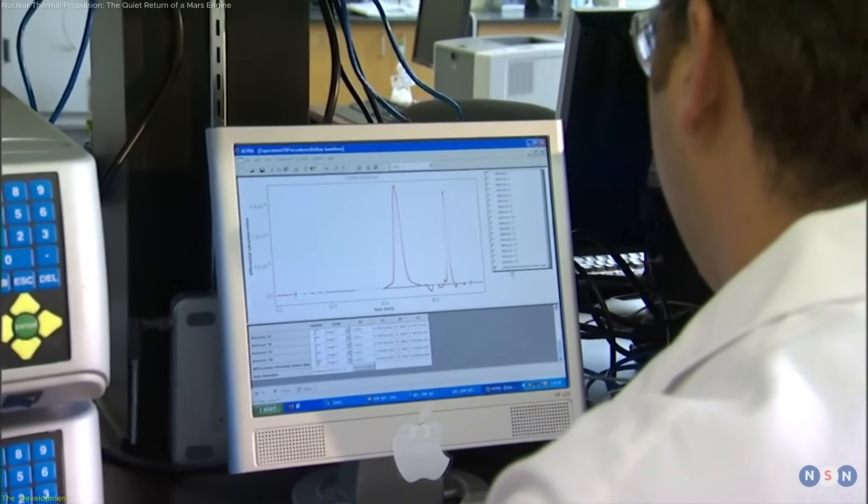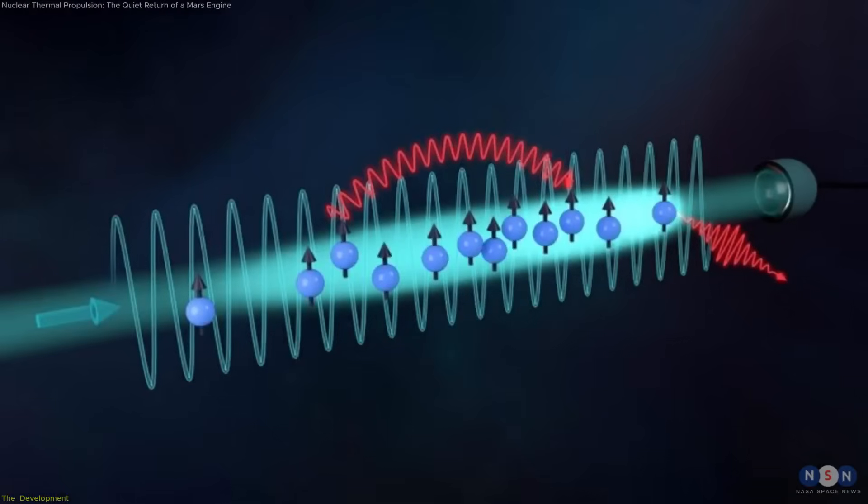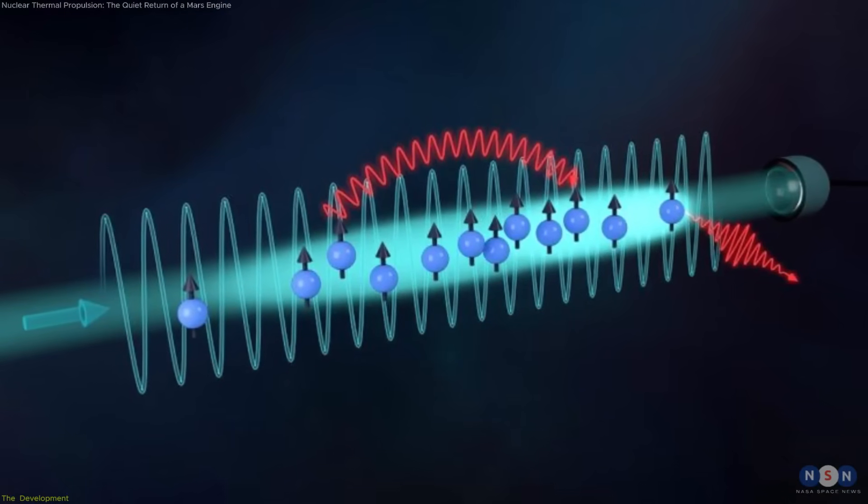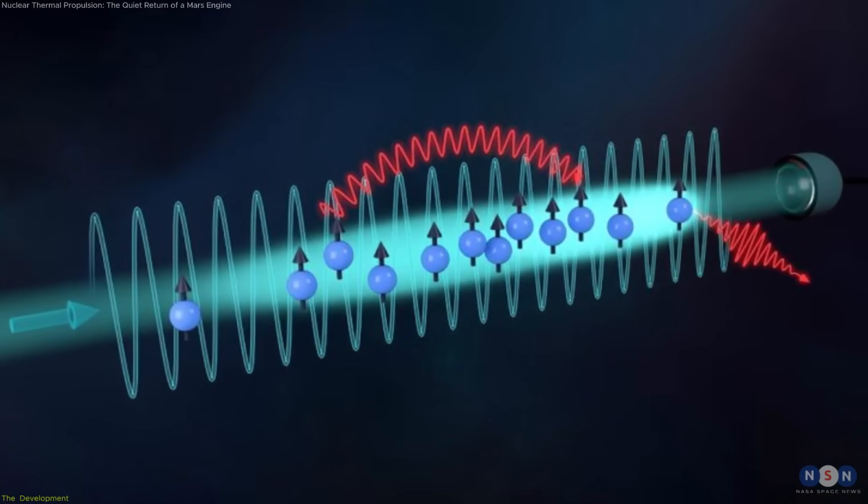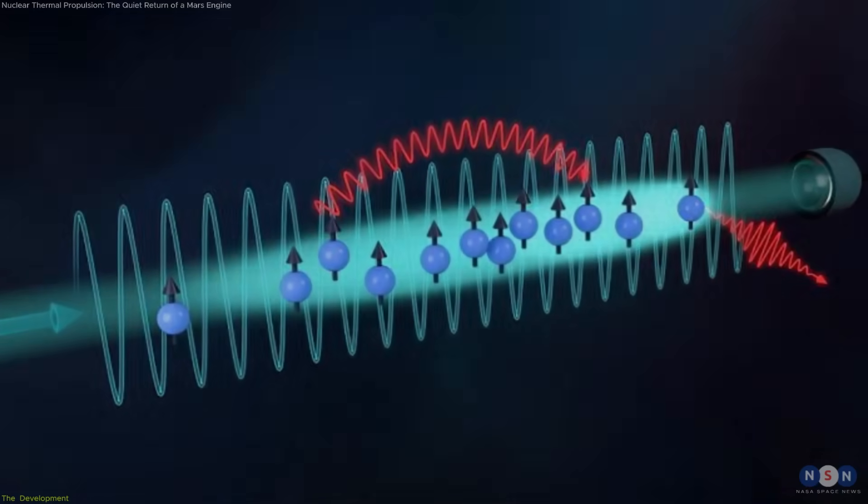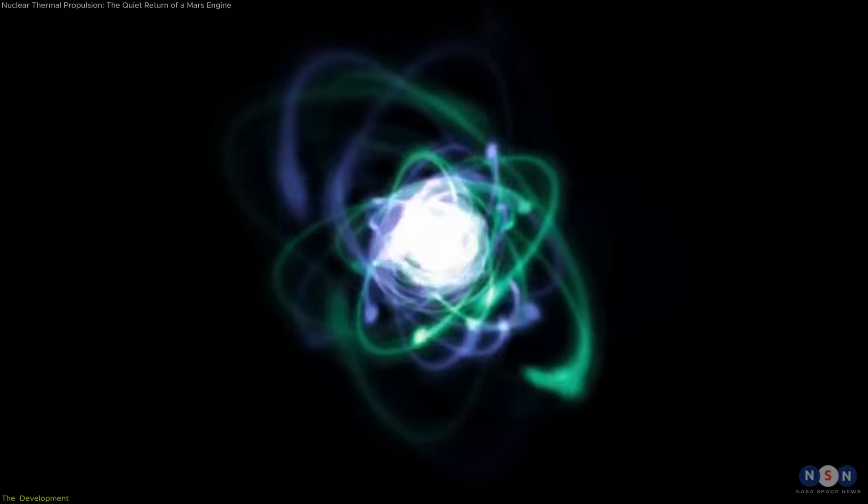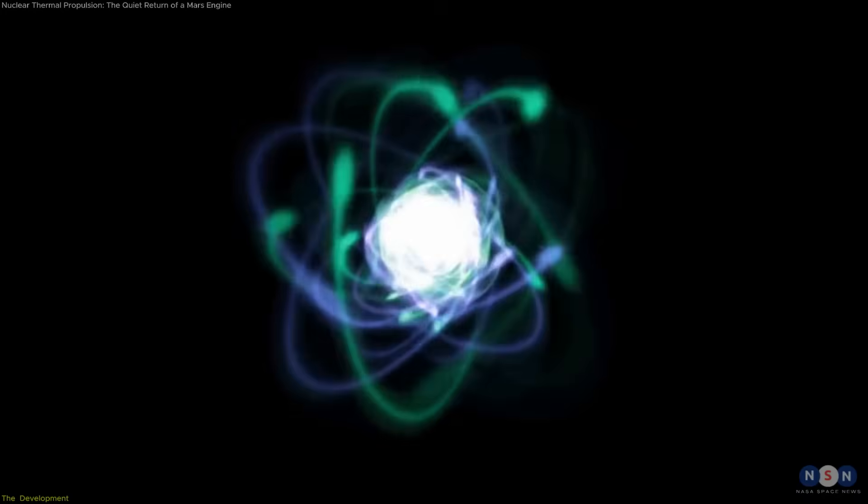What they observed was a smooth transition. When the atom's recoil was very uncertain, almost no path information was available, and the interference pattern was strong. As the recoil became more precisely defined, path information increased, and the interference pattern steadily faded.